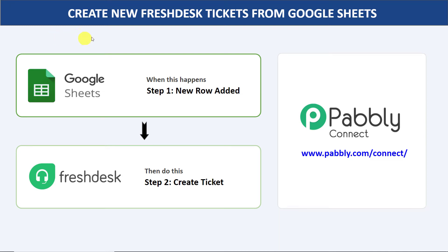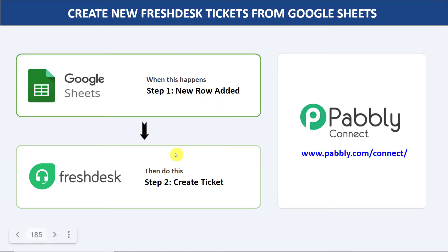Hello everyone. In this video we will learn how to automatically create new Fresh Desk tickets from Google Sheets. The idea is that if I enter some details into my Google Sheet, a new ticket will be created automatically in Fresh Desk. Since there is no direct connection between Google Sheets and Fresh Desk, I will be using an integration and automation software called Pabbly Connect. The best part is a person without any technical background can perform this integration easily.